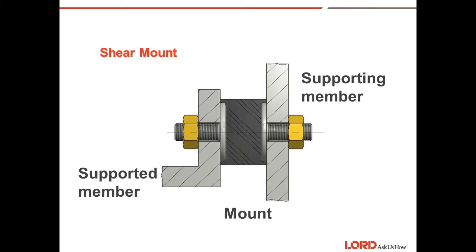Shear mount: This is a flex-bolt sandwich mount installed in shear. The load is perpendicular to the centerline of the stud, which allows the rubber section to operate in shear. The result is a very soft system that provides maximum protection in the vertical and fore-and-aft directions, and good protection in the lateral direction.